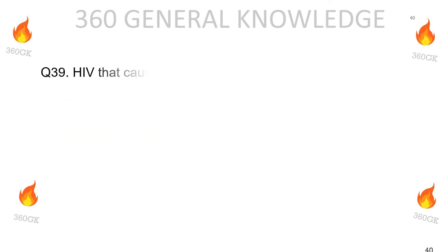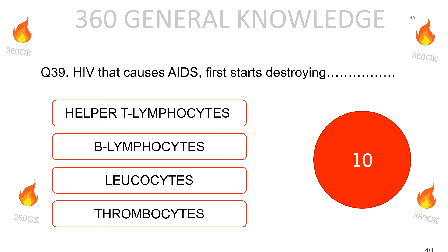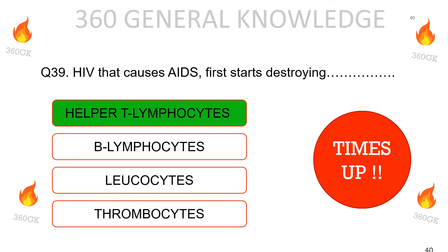HIV, which causes AIDS, first starts destroying: helper T-lymphocytes, B-lymphocytes, leukocytes, or thrombocytes? The correct answer is helper T-lymphocytes.